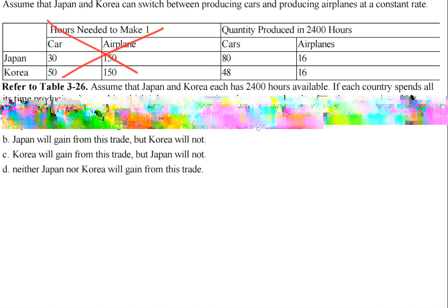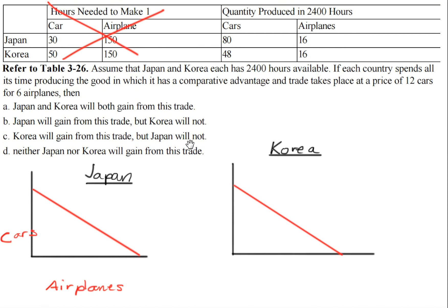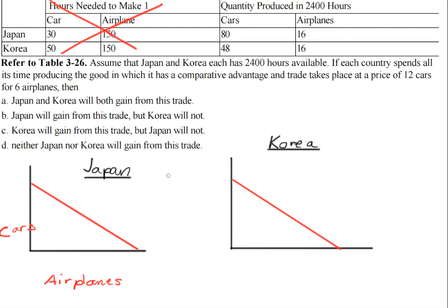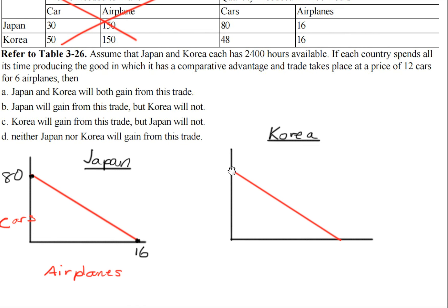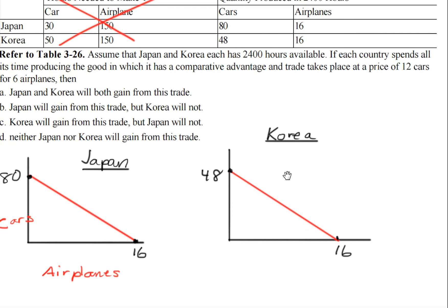Next we're going to make a production possibilities frontier curve between the two countries. On the y-axis we're going to have cars, and for Japan the most it can produce is 80 units of cars and 16 airplanes. Now we do the same for Korea — the most it can make is 48 units of cars and 16 units of airplanes.